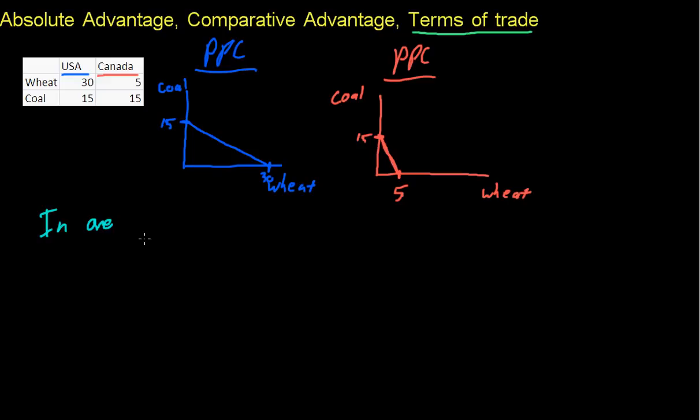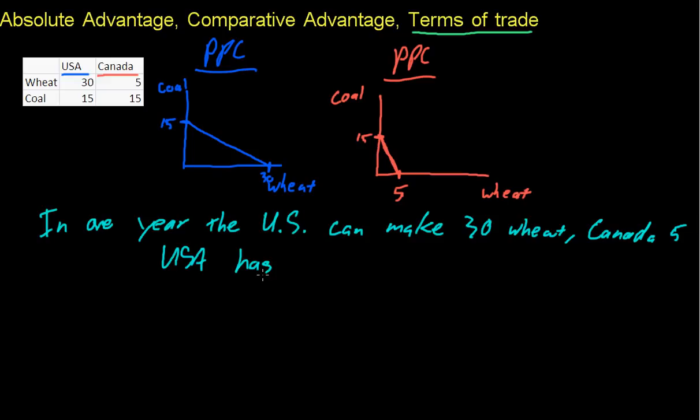The U.S. can make 30 wheat and Canada can only make 5. So the U.S. has the absolute advantage in wheat production.